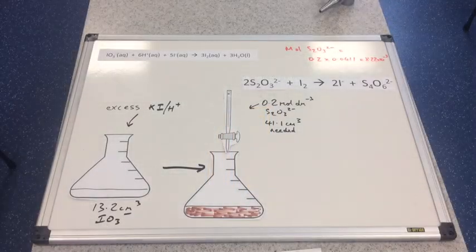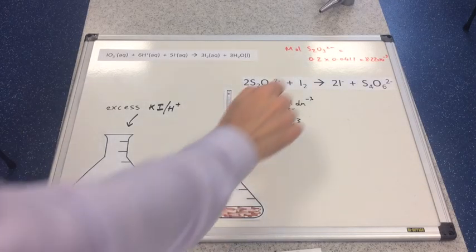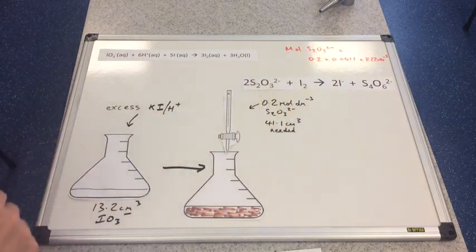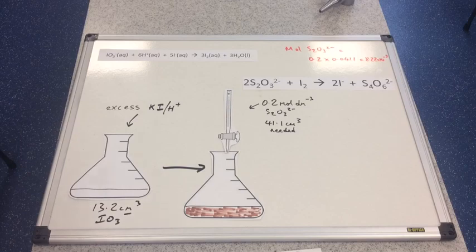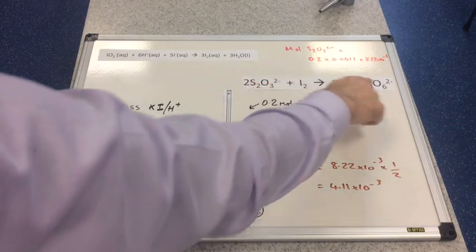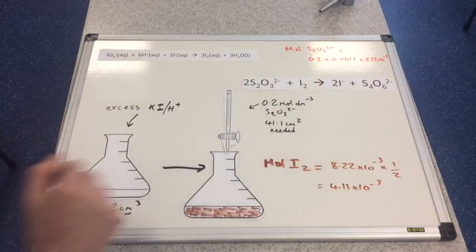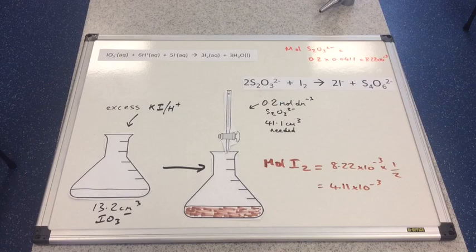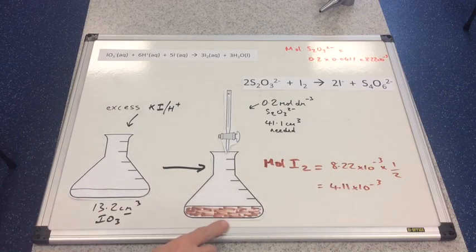As always, we start by calculating the moles of thiosulfate ions. You can see in red: concentration multiplied by volume in dm³, giving 8.22 × 10⁻³ mol of thiosulfate. From the mole ratio in the titration equation, moles of iodine is half the moles of thiosulfate, so we get 4.11 × 10⁻³ mol of iodine.